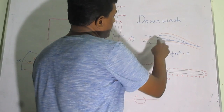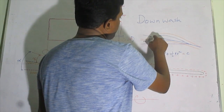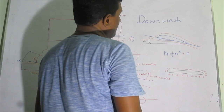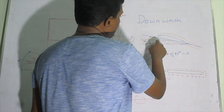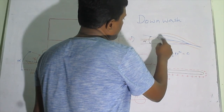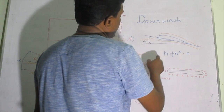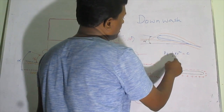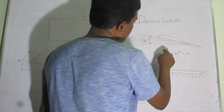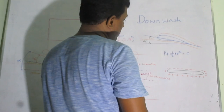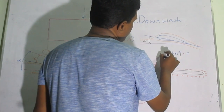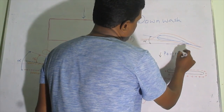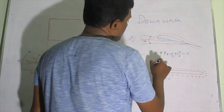On the top surface, the flow is accelerated — velocity increases. When velocity increases, pressure decreases. On the bottom surface, the flow is somewhat decelerated — velocity is decreasing and pressure is increasing. We can understand this easily using Bernoulli's theorem, which states that when velocity increases, pressure decreases, and vice versa.